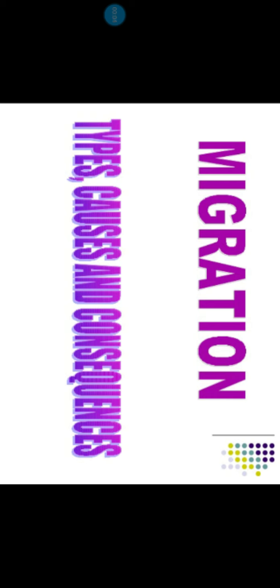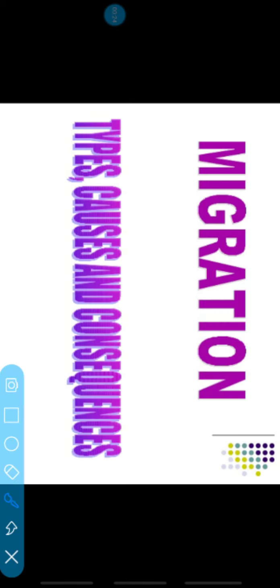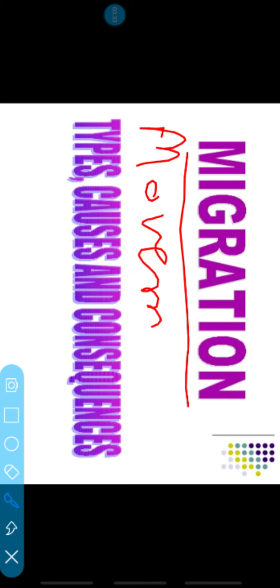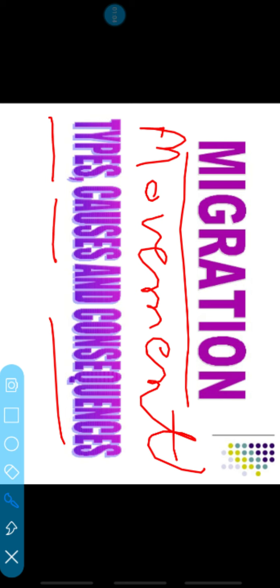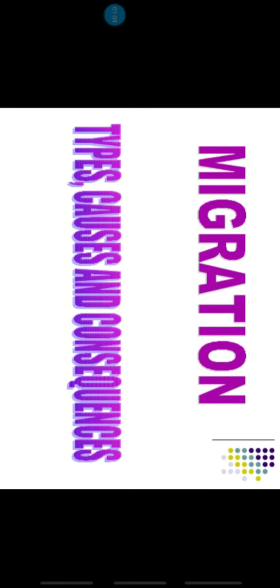Good morning students. We will start Chapter 2: Migration — Types, Causes and Consequences. In this chapter we will discuss about migration, which we already discussed in the last book on world human geography. Now we will discuss about India's migration. First we have to know the meaning of migration — movement of people from one place to another place due to some reasons, which may be for a job, for education, or due to security reasons. We will discuss the types of migration, the causes of migration, and the consequences — what results occur when people migrate.